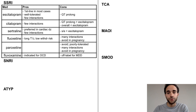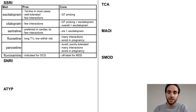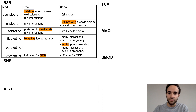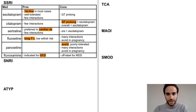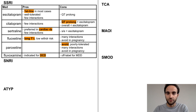Therefore, paroxetine should generally be avoided. Fluvoxamine is not FDA-indicated for MDD, but it is for OCD, so it may be a second-line choice for OCD. To highlight the key differences: escitalopram is first-line in most cases, citalopram causes QT prolongation, sertraline is preferred in cardiac disease, fluoxetine has a long half-life, paroxetine should be avoided in most cases, and fluvoxamine is specifically indicated for OCD.